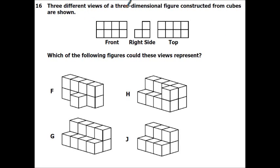Three different views of a three-dimensional figure constructed from cubes are shown. Which of the following figures could these views represent? Alright, so your front view is four by four. So you have to have four by four, going four across, two up. Four across, two up. Four across, two up.